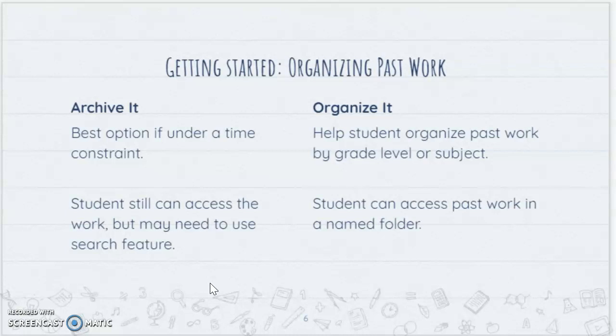Two choices at the beginning: you could make one folder called 'Archive' or 'Past Work' and put everything they've done up to now in there. This is the best option if you're under a time constraint. Students can still access work in that folder, but since it'll be jumbled they may need to use the Google Drive search to find things quickly. The other option is to take the time to have kids organize past work by grade level or by subject, so they can find it just by looking at the named folder.